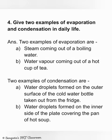Question 4 — Give two examples of evaporation and condensation in daily life. Examples of evaporation: (A) steam coming out of boiling water, (B) water vapour coming out of a hot cup of tea. Examples of condensation: (A) water droplets formed on the outer surface of a cold water bottle taken from the fridge, (B) water droplets formed on the inner side of a plate covering a pan of hot soup.